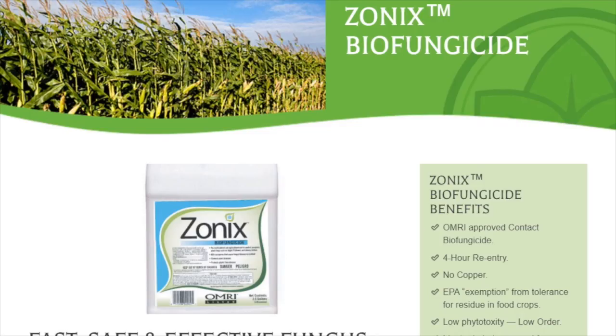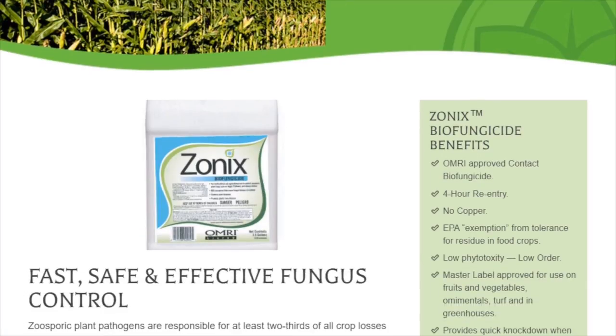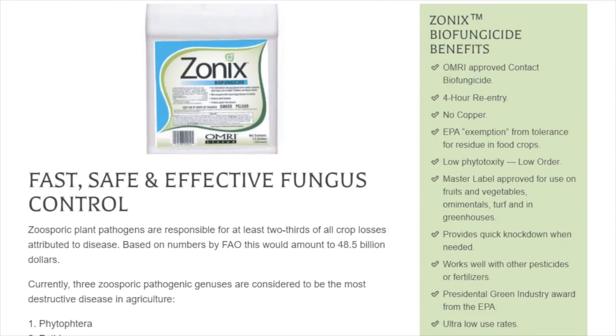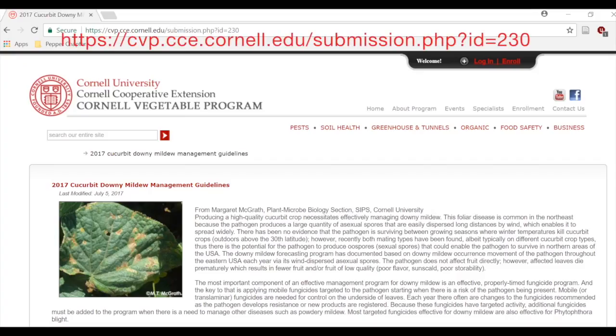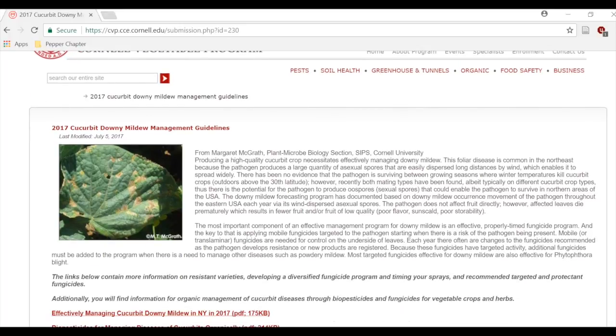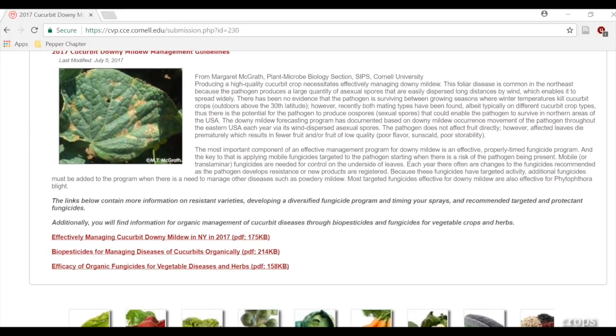One OMRI-listed pesticide that has been shown to be effective for controlling cucurbit downy mildew is Zonix, a rhamnolipid biosurfactant that kills zoospores. For more information about Zonix and other chemical control methods, consult up-to-date resources as people explore the best ways to integrate biological and chemical controls. The Zonix definitely helps, though this year, because of the intense pressure, certain cultivars just succumbed — the pressure was way too high.